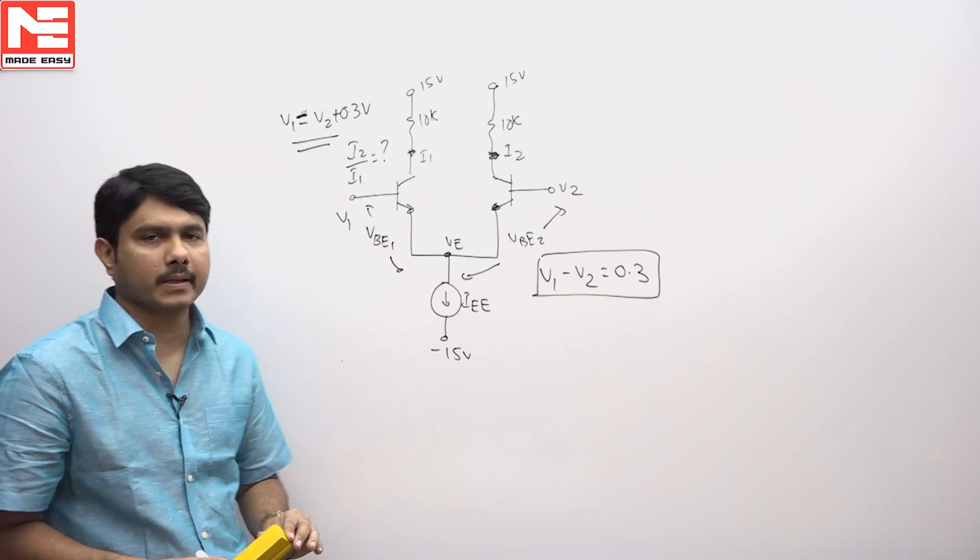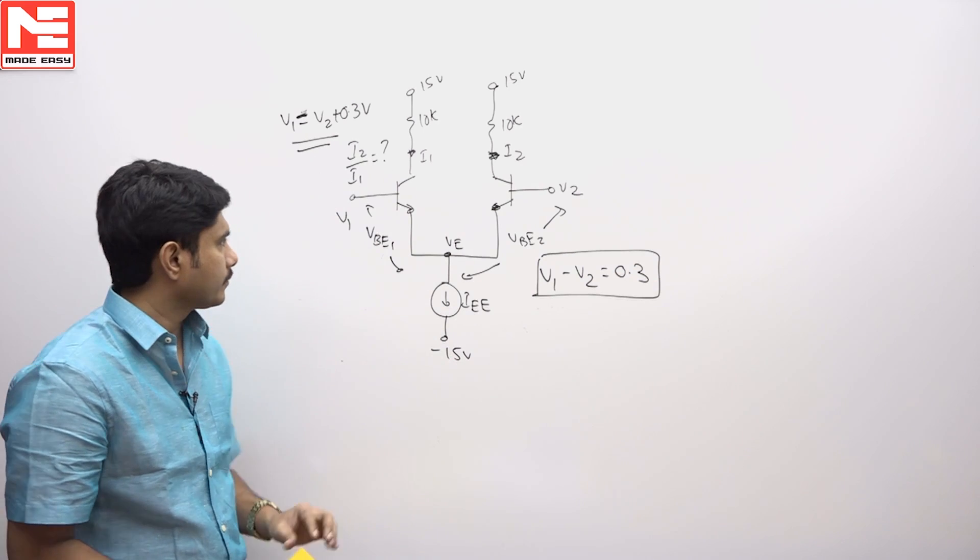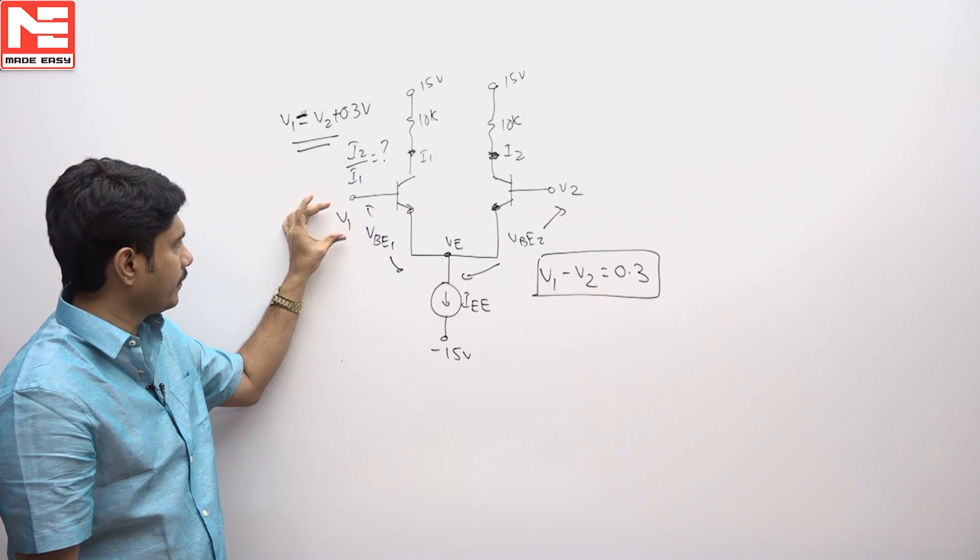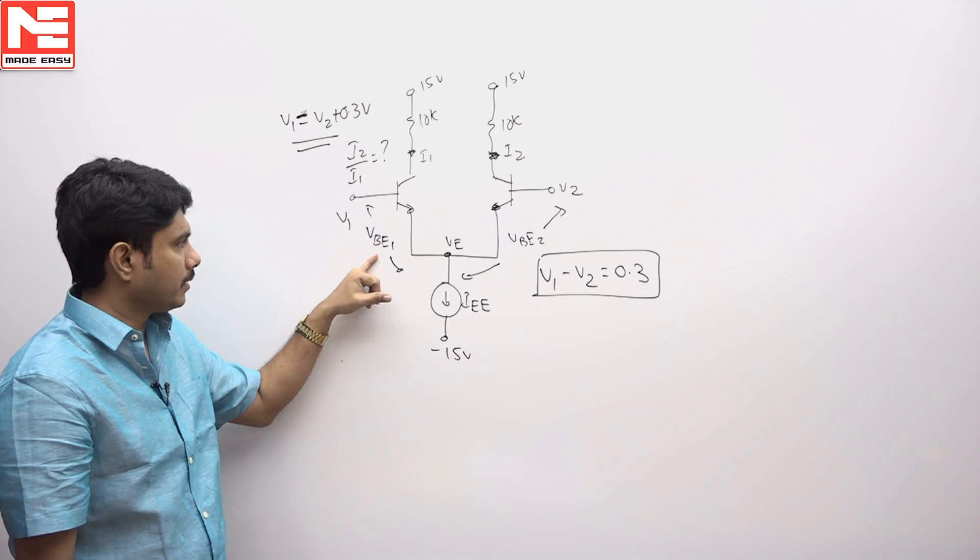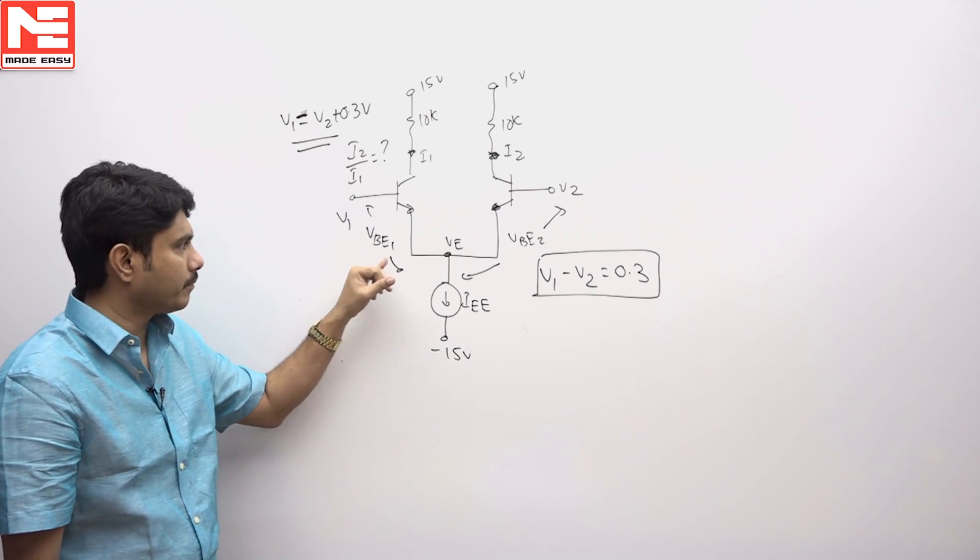So the difference between V1 minus V2 you can take it as 0.3 but actually V1 is nothing but VB1 plus VE.